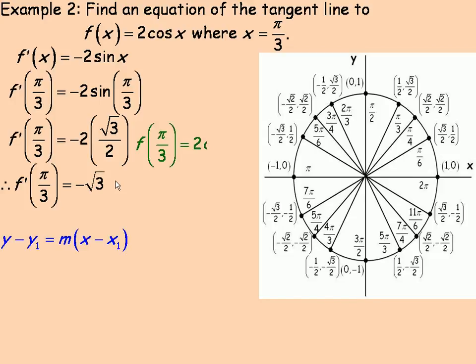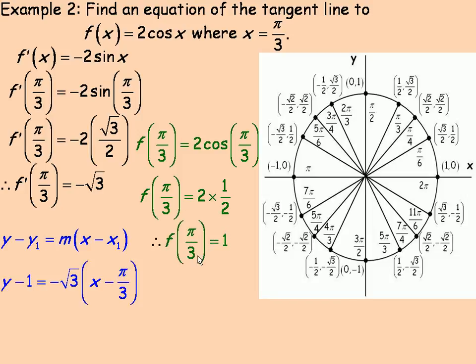Here's our equation, but we need the y-value. So we substitute π/3 back in place of x in our original function. The cosine of π/3 would be 2 times 1/2, which is 1. We can substitute the values in: -√3 is m, the y-value is 1, and x is π/3.